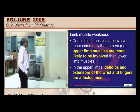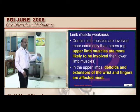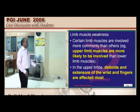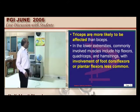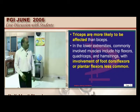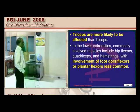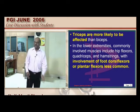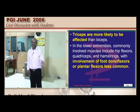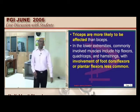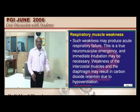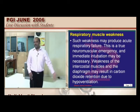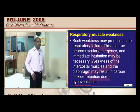In the upper limbs, deltoids and extensors of wrists and fingers are most affected; triceps is more likely affected than biceps. In lower limbs, hip flexors, quadriceps, and hamstrings are commonly involved, while dorsiflexors and plantar flexors are less involved. Finally, the diaphragm can become affected leading to respiratory failure and ventilator dependence.